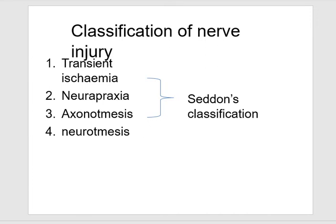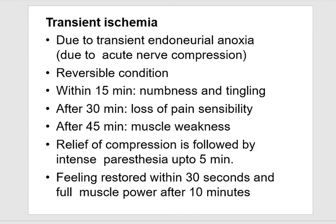Classification of nerve injury by Seddon: transient ischemia, neuropraxia, axonotmesis, and neurotmesis. Transient ischemia is due to transient endoneural anoxia from acute nerve compression. It is a reversible condition within 15 minutes. Numbness and tingling occur after 30 minutes with loss of pain and sensibility. After 45 minutes there is muscle weakness, and relief of compression is followed by intense paraesthesia up to 5 minutes, feeling restored within 30 seconds, and full power returning after 10 minutes.